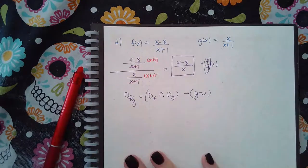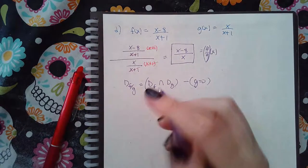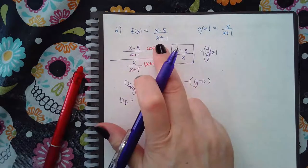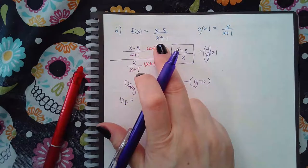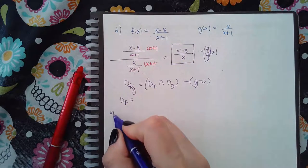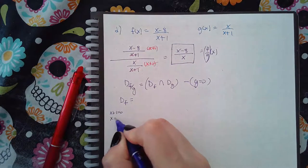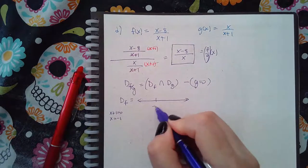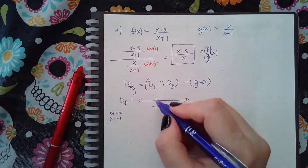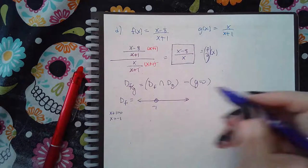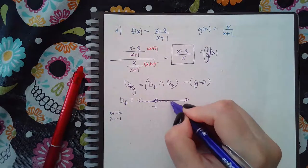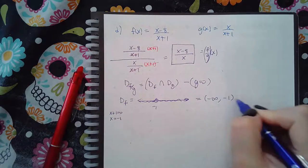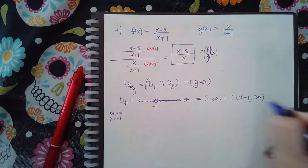We're going to find first domain of f, and that's all real numbers except when the denominator equals 0. So when x plus 1 equals 0, that means negative 1. So on a number line, it looks like negative 1 is not included, but everything to the left and everything to the right, which is the same as saying negative infinity to negative 1 and then negative 1 to infinity.